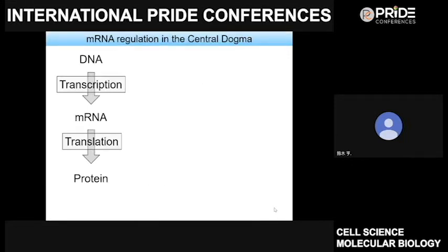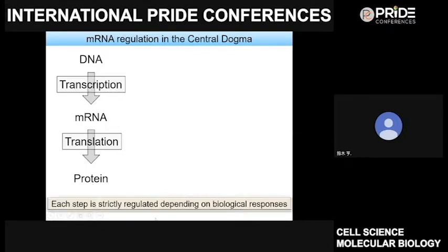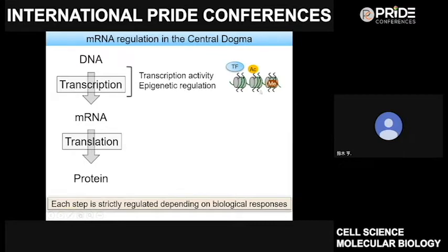This slide shows the flow of genetic information from DNA to protein, so-called central dogma. All steps are strictly regulated depending on the cellular context. For example, signal transduction induced activation of transcription factors contribute to this step. Moreover, epigenetic regulation such as histone modification largely affects the presence or absence of transcription.